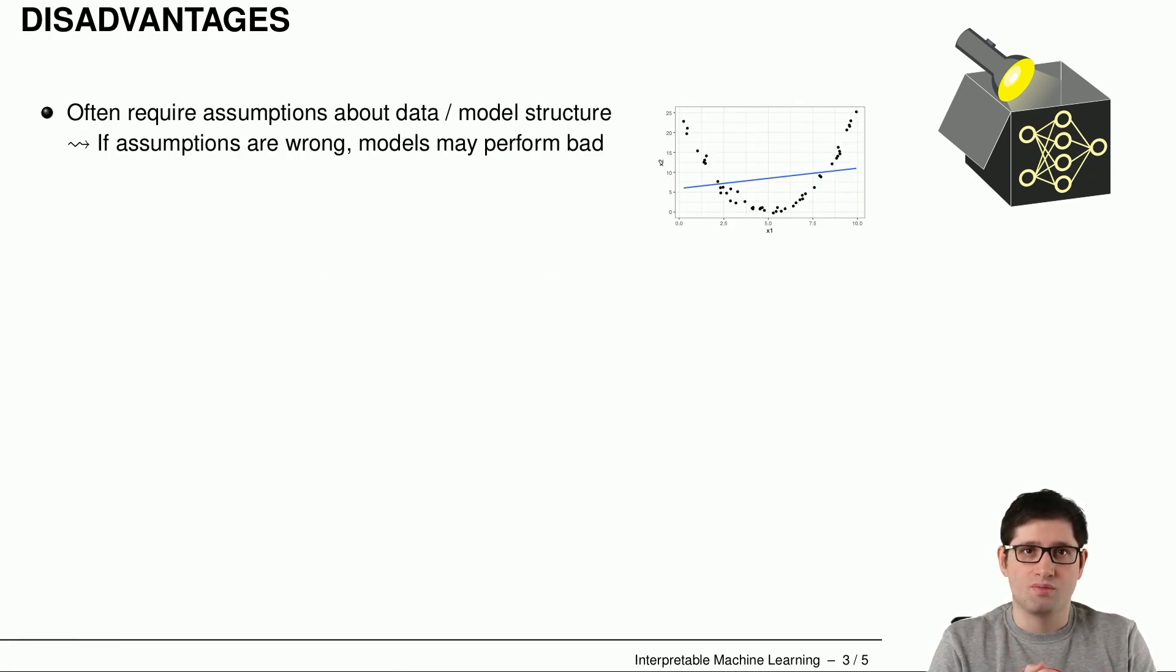Now we will have a look at some disadvantages. Some of these inherently interpretable models have some strong assumptions either about the data or about the model structure. And if the assumptions are wrong, then the models perform bad. We have illustrated here on the right-hand side a real underlying quadratic effect by the points here. And if you fit a linear regression model, it would look like this line here. Of course, linear regression models make only sense if this relationship between the feature and the target is somehow expected to be linear or approximately linear.